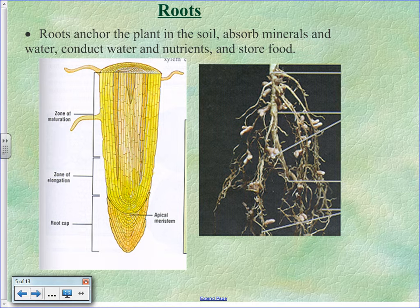Most weeds have a taproot because it allows them to get deeper than surrounding plants, so they don't have to compete with those roots. When it gets dry, they're the ones that survive where grass dies because grass roots aren't very deep.